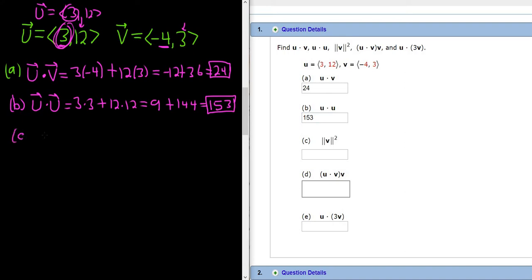Part c, we have to find the magnitude of v squared. Recall that the magnitude of v is simply the square root of the component squared. So negative 4 squared plus 3 squared. That's the magnitude of v.